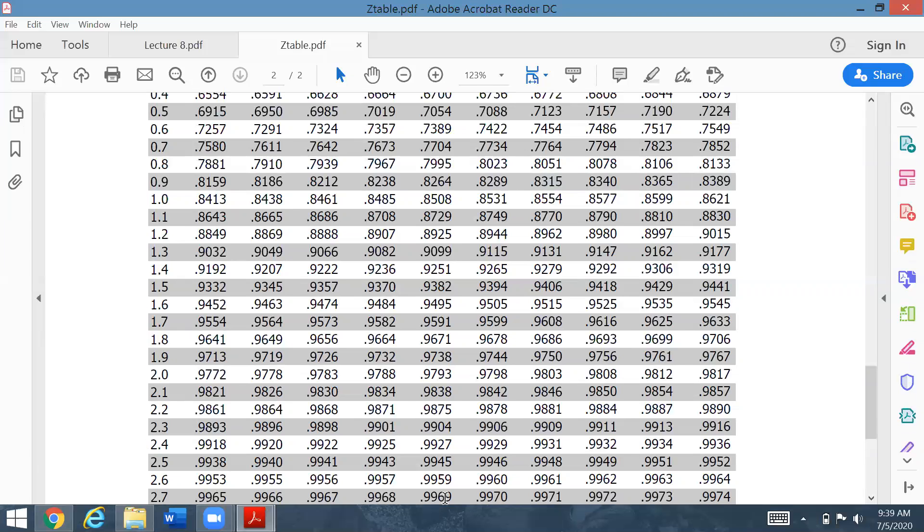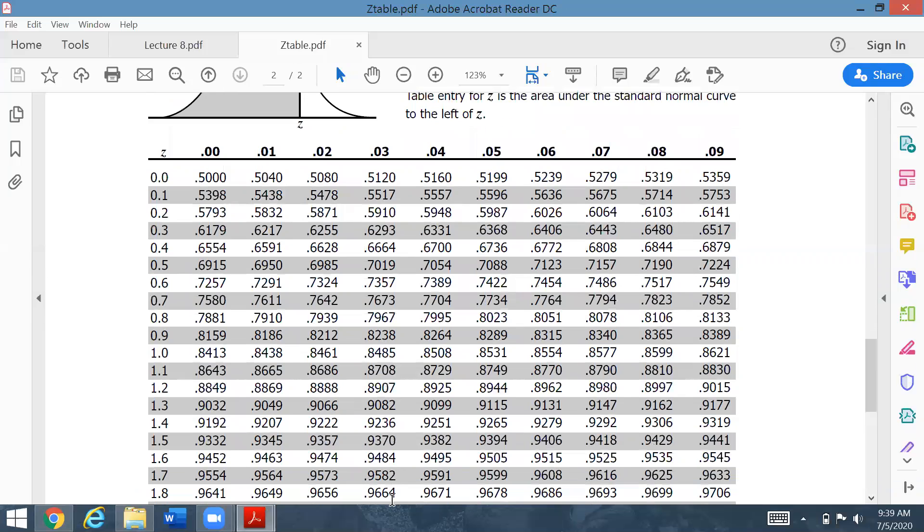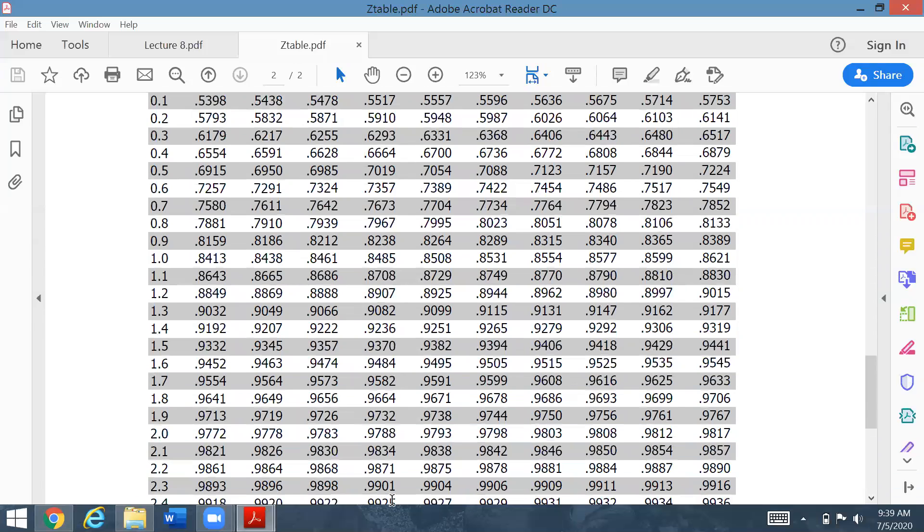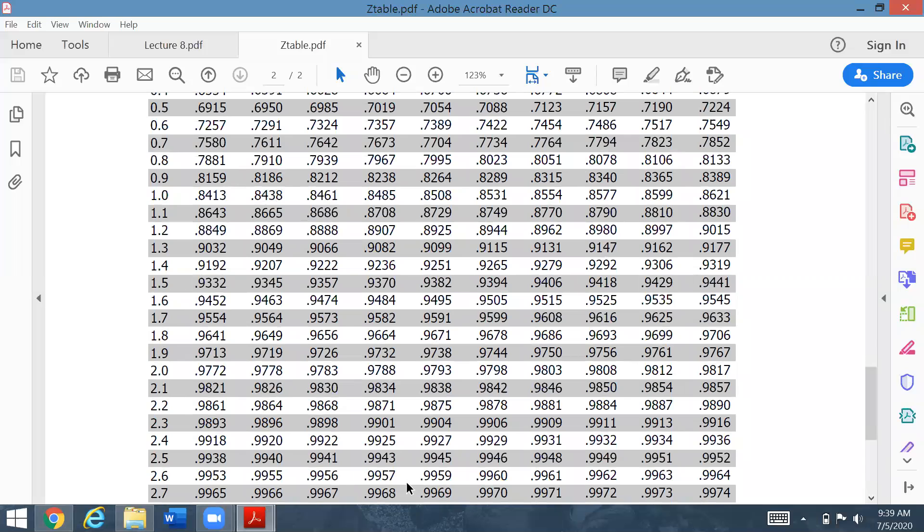Here it is, 2.7. This value is 0.9968. The second value is for minus 0.59. This value you have to get from the table.